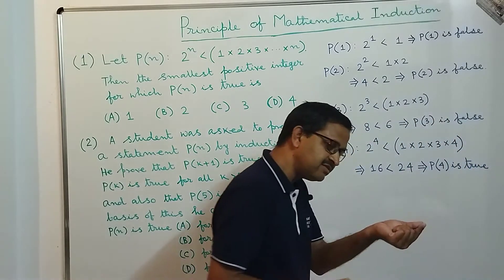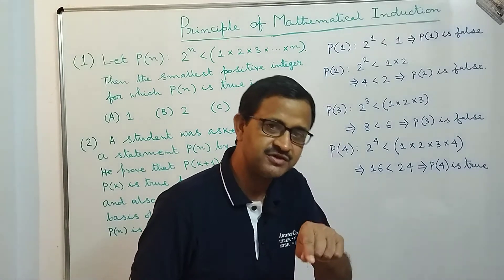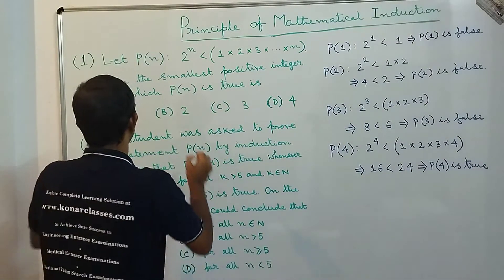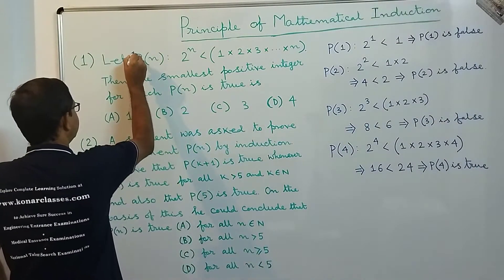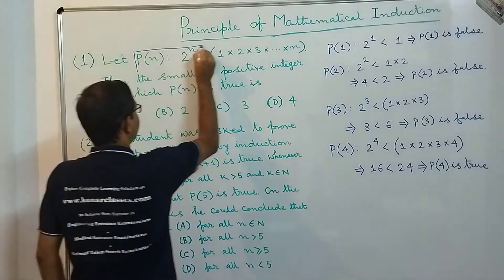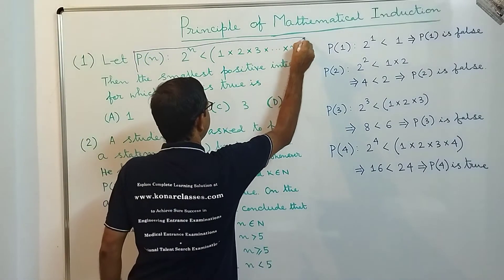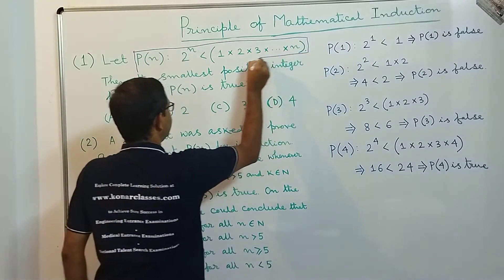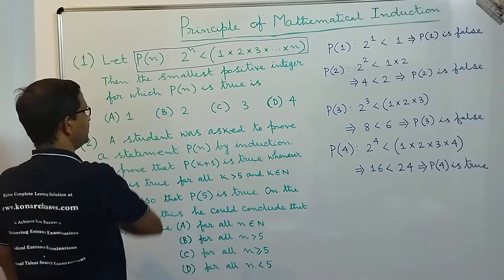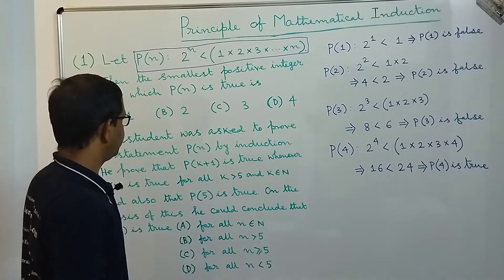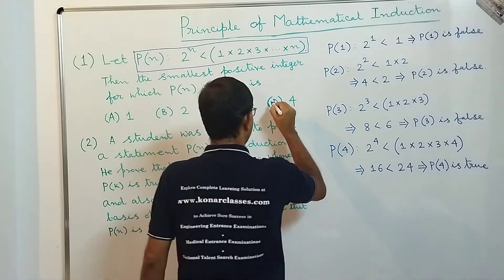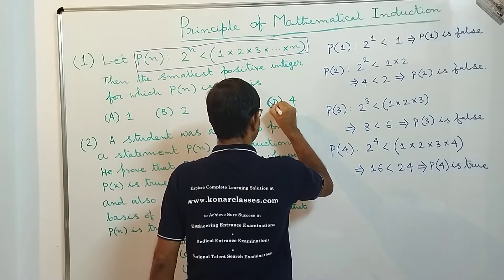That means 4 is the smallest positive integer for which the statement P(n): 2^n < 1·2·3·...·n is true. So the correct option is option D.